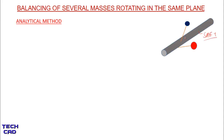This is our shaft and on the shaft we have two masses. Let us suppose this is M1 and this is M2. They make some angle with the axis of rotation, or the axis of the shaft. So let us suppose this is theta 1 and this is theta 2. From this view the angles are not very visible because this is just an isometric view. We have to make another diagram called a space diagram, which is a side view of the shaft from which we can easily see the angles.